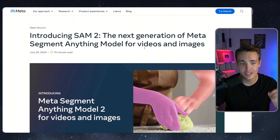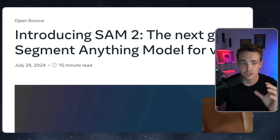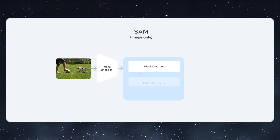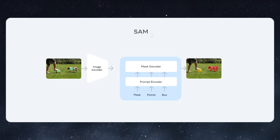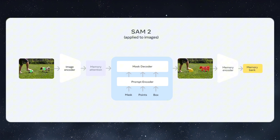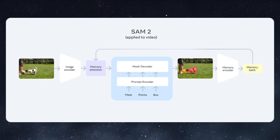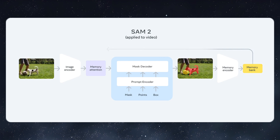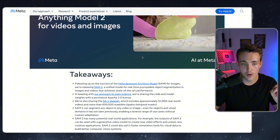Looking at the blog post released by Meta, they're introducing SAM2 as a significant upgrade compared to version 1. Version 1 was groundbreaking in the computer vision industry — both for annotating images and labeling your own datasets. You can use it with points, bounding boxes, and even masks to segment out any object in your images.